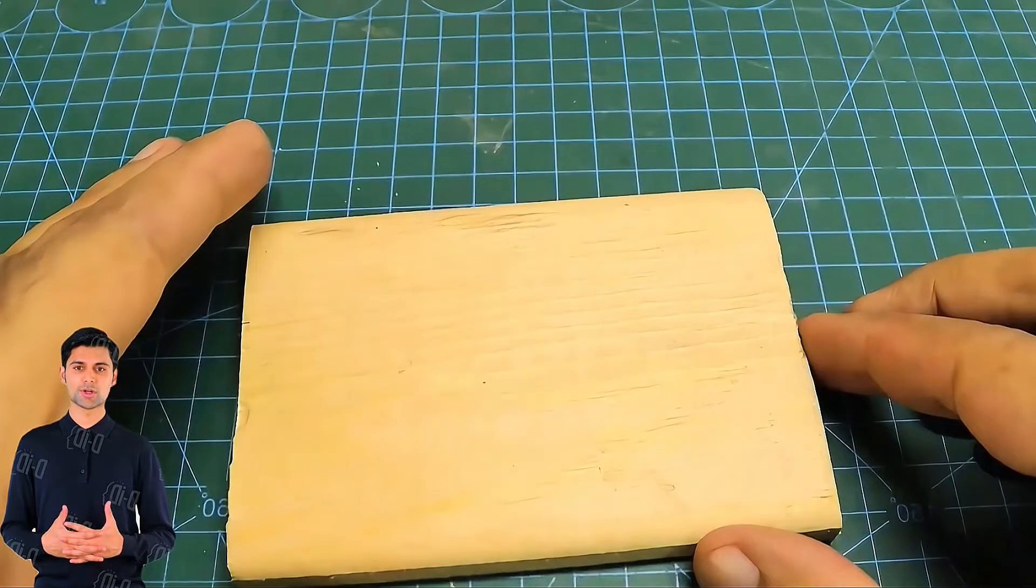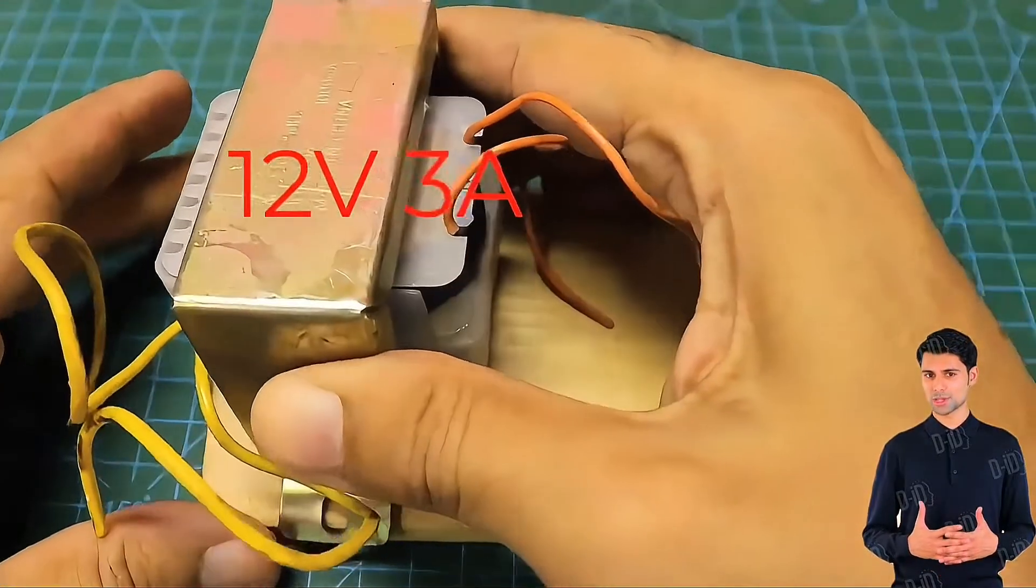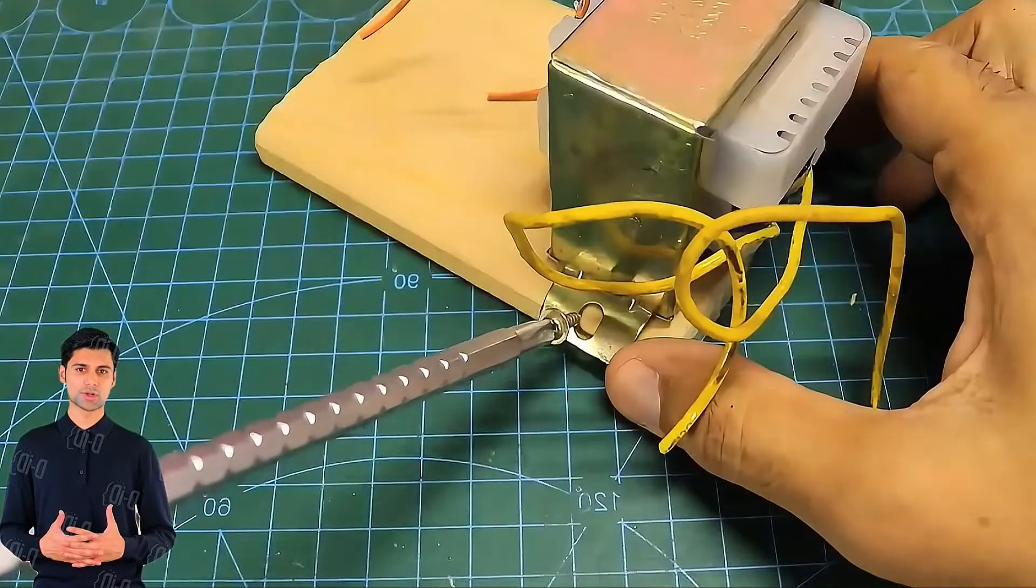First prepare a wooden board as a base. The transformer used here is a 12 volt 3 amp. Secure it to the base.